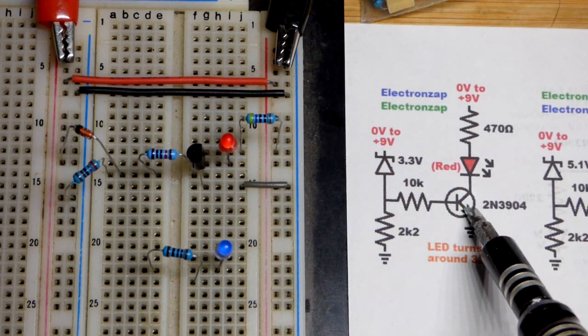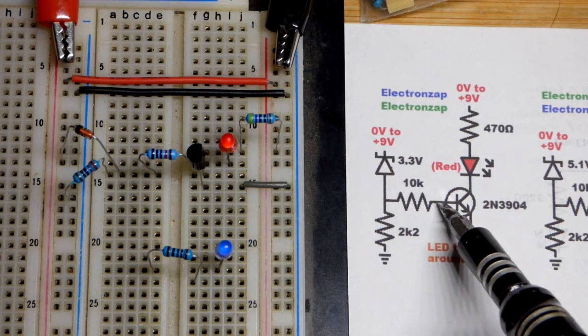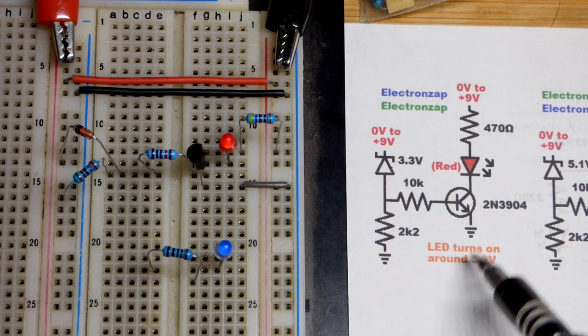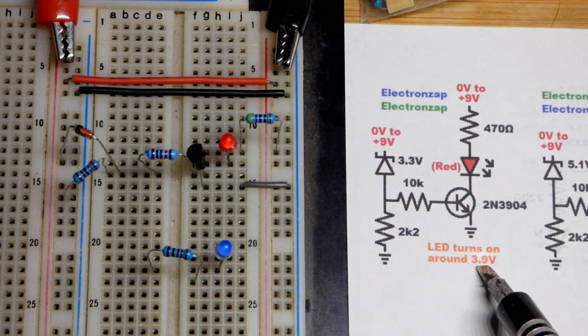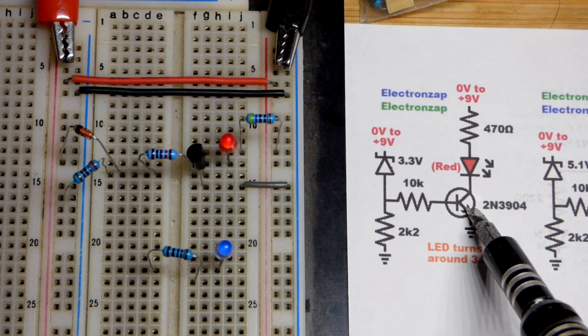Ideally this transistor would not turn on until we get higher than 3.3 volts plus 0.6, maybe even 0.7 volts right there for a total of about 3.9 volts. At that point, this should turn on.